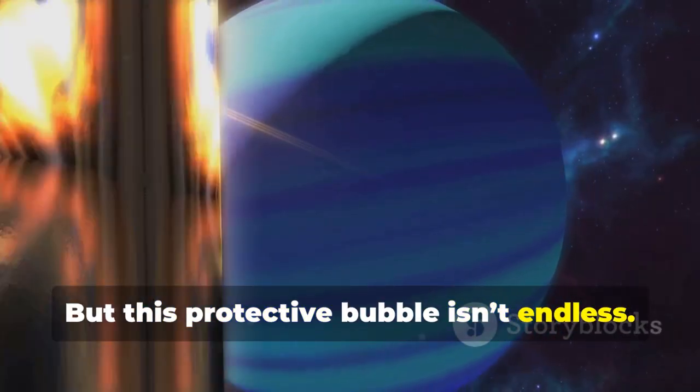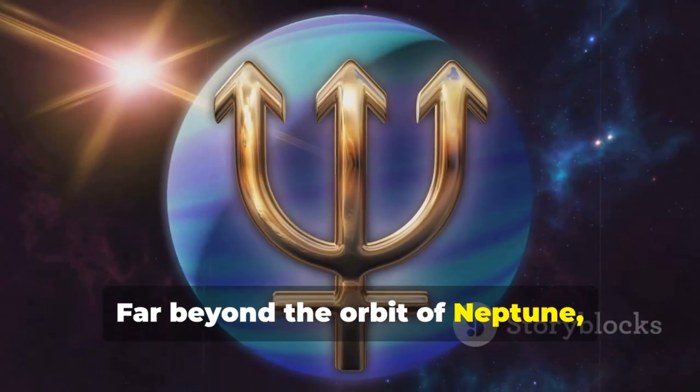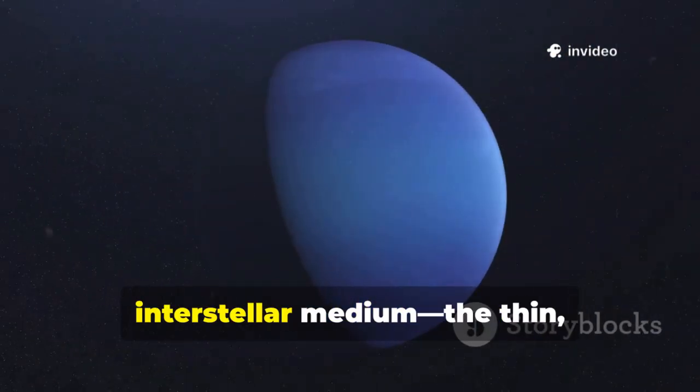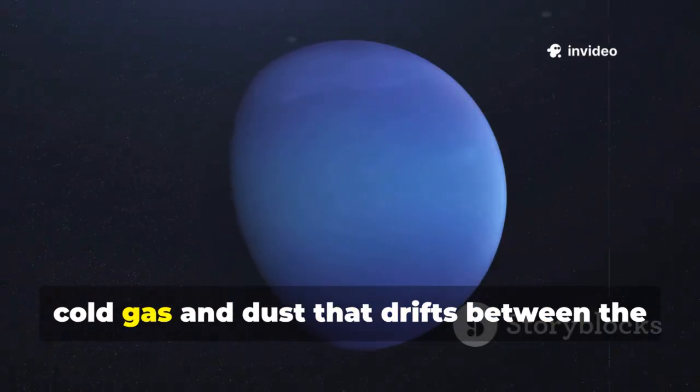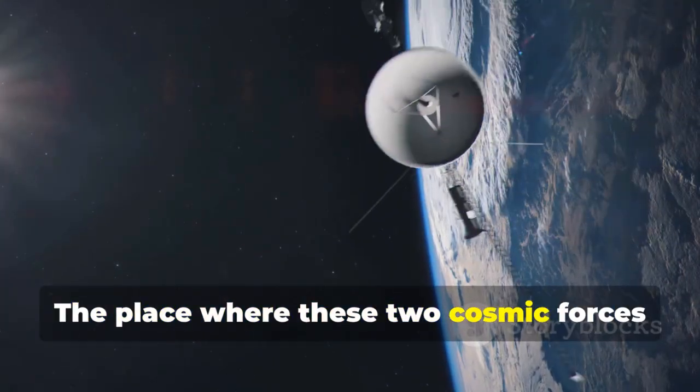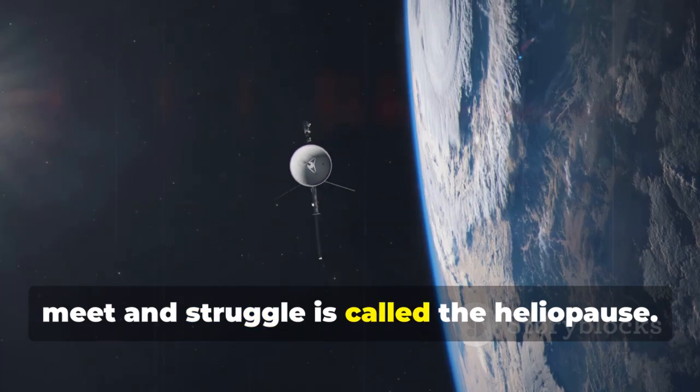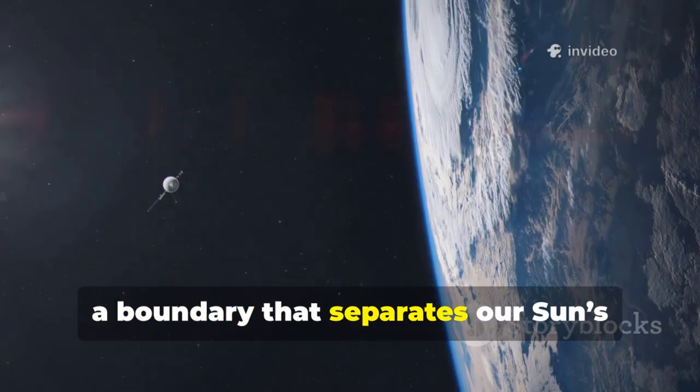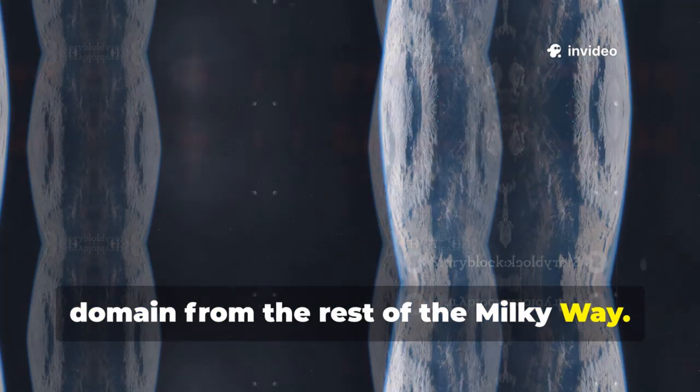But this protective bubble isn't endless. Far beyond the orbit of Neptune, the solar wind slows and weakens, eventually colliding with the interstellar medium, the thin cold gas and dust that drifts between the stars of our galaxy. The place where these two cosmic forces meet and struggle is called the heliopause. It marks the true outer edge of our solar system, a boundary that separates our sun's domain from the rest of the Milky Way.